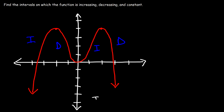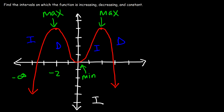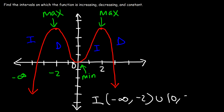The function is increasing starting from negative infinity, and then it changes direction at negative 2 — this is known as a local maximum or relative max. This next turning point is called a relative minimum, and here is another relative maximum. So it's increasing from negative infinity to negative 2, union, and then increases again from 0 to 2. It's decreasing from negative 2 to 0.